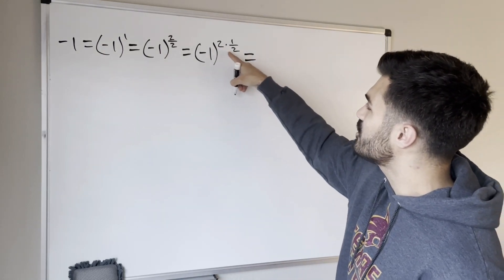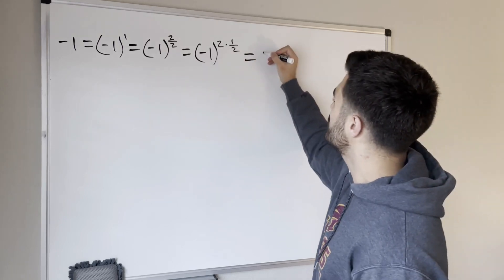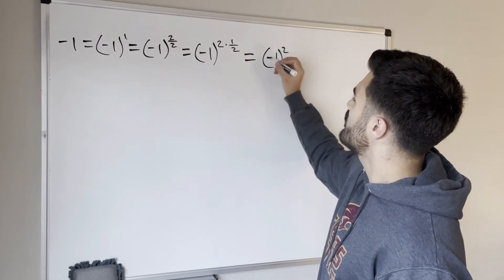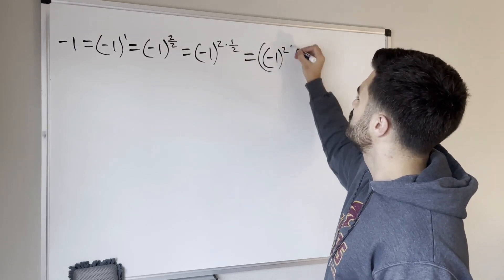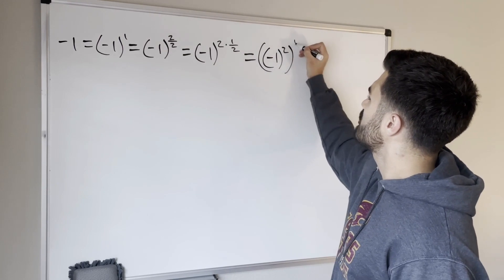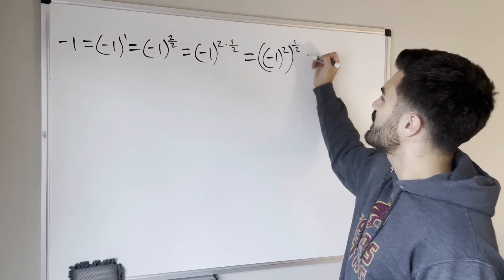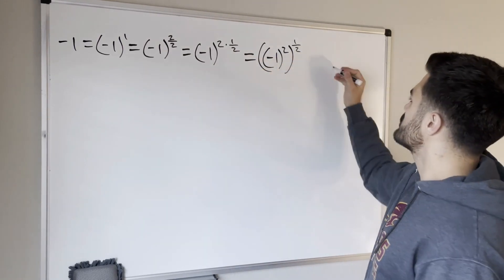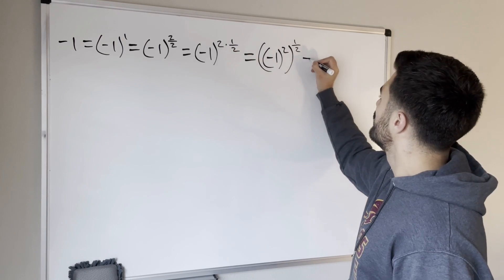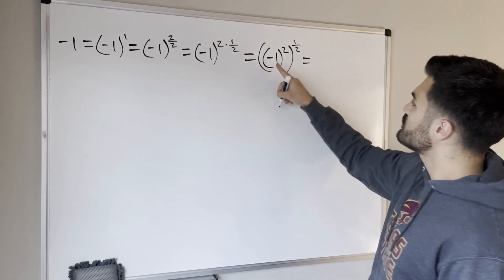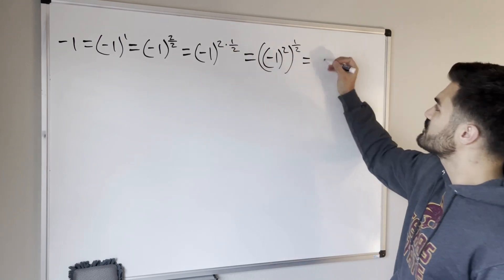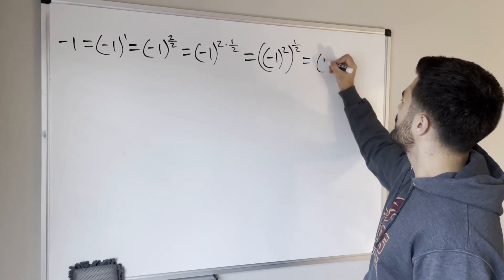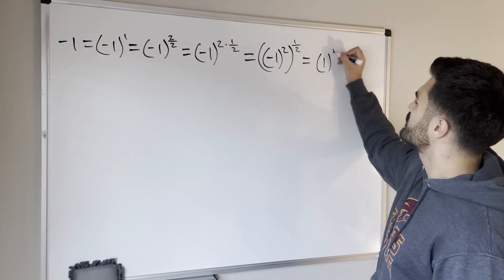Since we have the product of two numbers, we can write that as negative 1 squared, to the one half power. We have that power to a power, so we multiply — so we're good here. This equals... well, negative 1 squared is 1, so we can simplify that middle as 1, and we still have that one half up here.